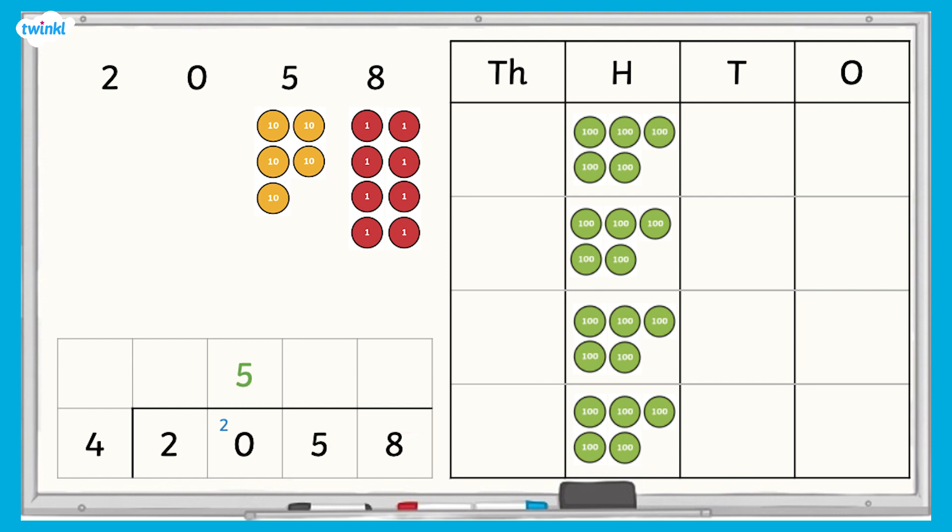Next, we divide the tens. Five tens divided by four equals one ten with one ten left over. Because there is one ten in each group, we write a one in the tens column above the line. We then need to exchange the remaining ten into ten ones. We now have eighteen ones, so we write a one in front of the eight in the ones column.